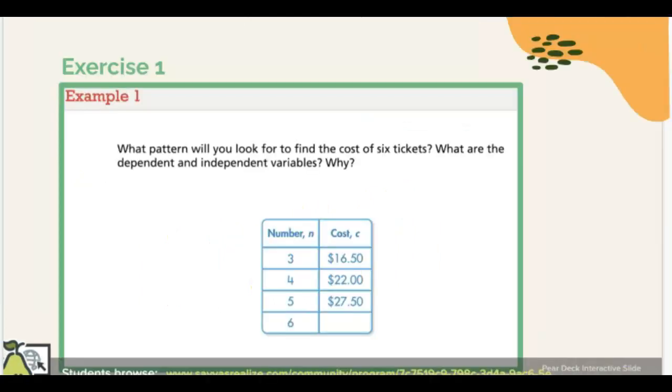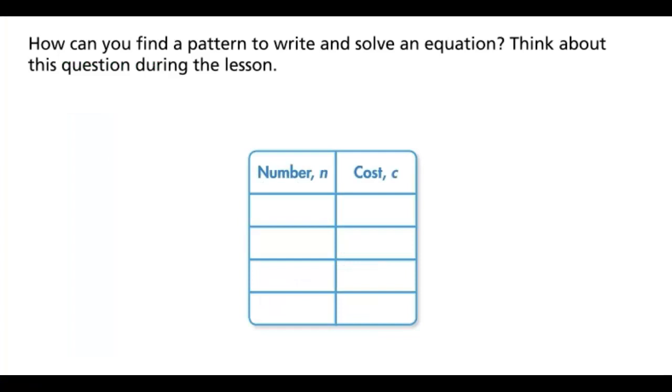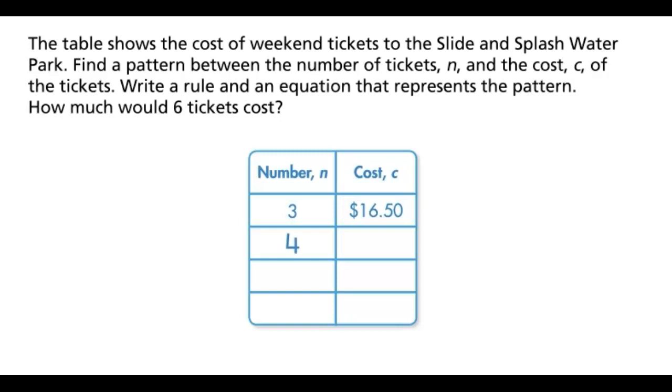Today we're going to work on Exercise 1. We'll check what pattern you'll look for to find the cost of 6 tickets in this table. We'll also need to find the independent and dependent variable. The table shows the cost of weekend tickets to the Slide and Splash Water Park. Find a pattern between the number of tickets n and the cost c of the tickets. Write a rule and an equation that represents the pattern. How much would 6 tickets cost?